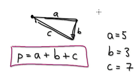So what that means is we have a triangle where A is 5, and B is 3, so it's quite short here, and C is 7.